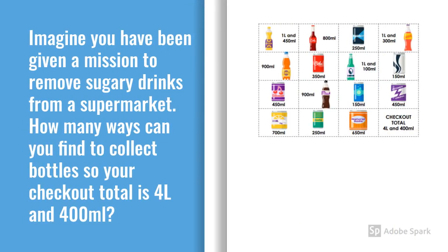This is the twist it part of the lesson which you will find on the worksheet. Imagine you have been given a mission to remove sugary drinks from a supermarket. How many ways can you find to collect bottles so your checkout total is 4 litres and 400 millilitres. Remember it's not just one way. How can you get from the start to the end and still have that total? Good luck!